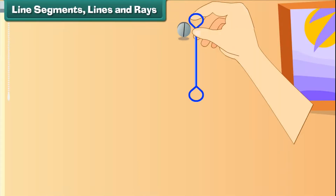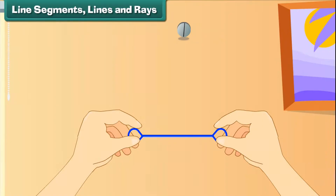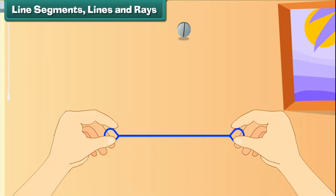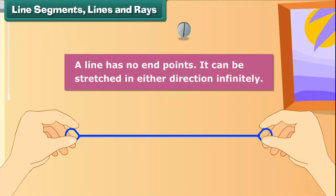Let us now remove the nail and stretch the rubber in the other direction. We now have a line. A line has no end points. It can be stretched in either direction infinitely.